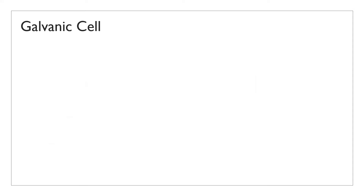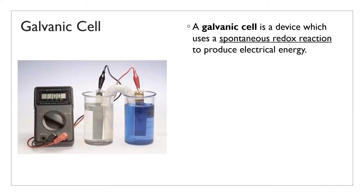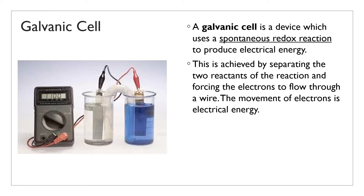This is where the idea of a galvanic cell comes in. A galvanic cell takes a spontaneous redox reaction and uses it to produce electrical energy. This is achieved by separating the two reactants and forcing the electrons to flow through a wire — this movement of electrons is essentially electrical energy. In this setup, the zinc and copper ions are separated from each other, which is the most important feature of a galvanic cell. By separating them, you force electrons to go from the zinc through the wire into the other solution to be received by the copper ions, and that flow of electrons through the wire gives off electricity.